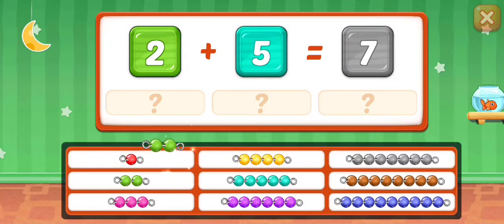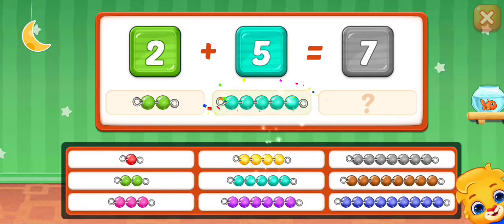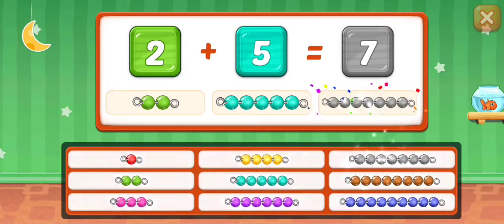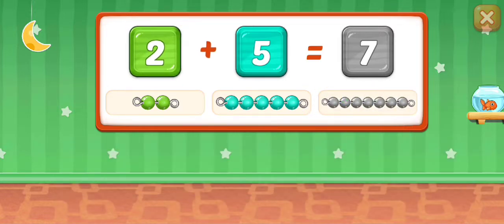Two. Four, five, five. Seven, two plus five equals seven.